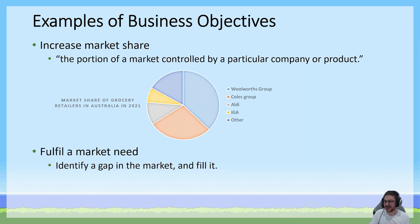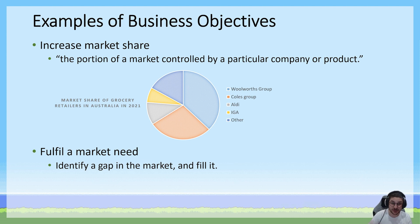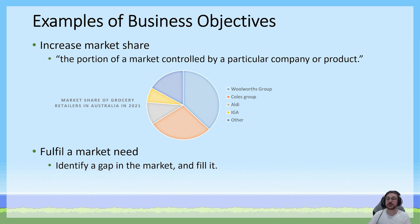Other business objectives include to increase market share. Market share is the portion of a market controlled by a particular company or product. In this pie chart you can see which businesses sold the most groceries to Australians in 2021: Woolworths Group sold the majority, Coles Group weren't far behind, and Aldi, IGA, and miscellaneous others account for basically the remaining third. This represents the market share of the Australian grocery market.